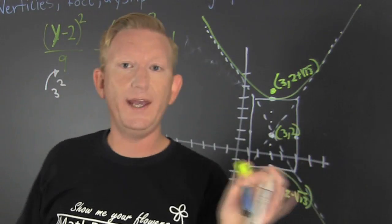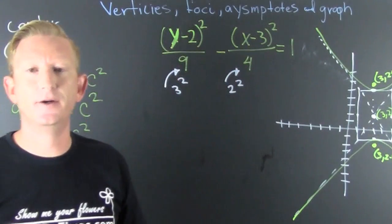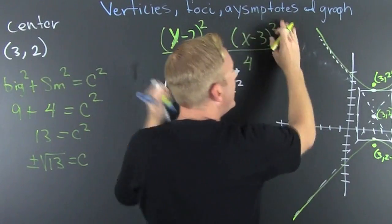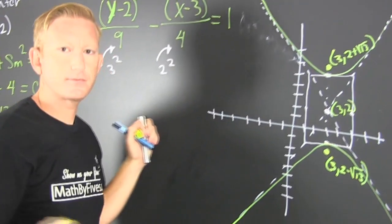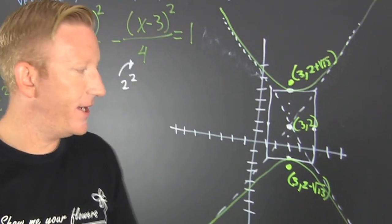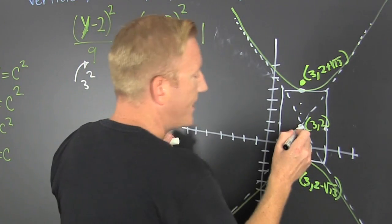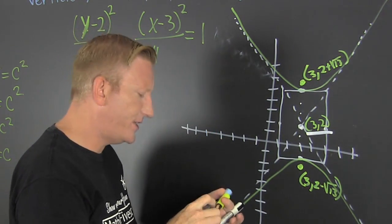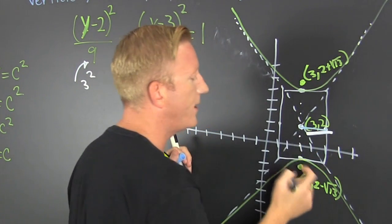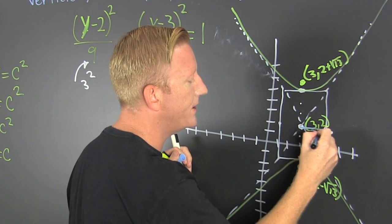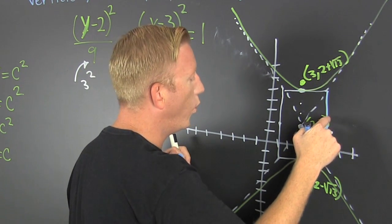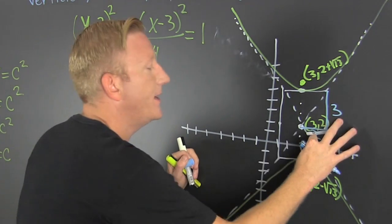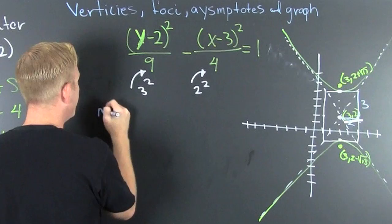Now let's find the asymptotes — the equations of those lines. To find the equation of a line you need a point and a slope. We pick the center (3, 2), which is shared by both asymptotes. For the slope, rise over run: it rises 1, 2, 3 units and runs 1, 2 units — that's where your textbook gets the a over b thing.